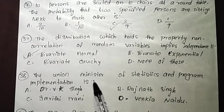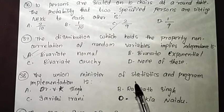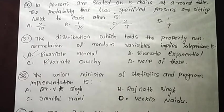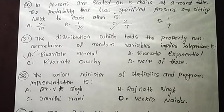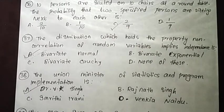The Union Minister of Statistics and Programme Implementation is Option A — V.K. Singh.